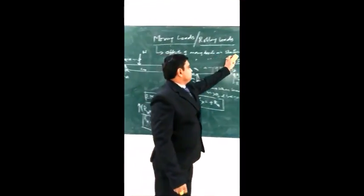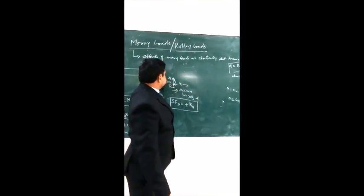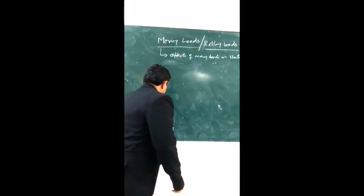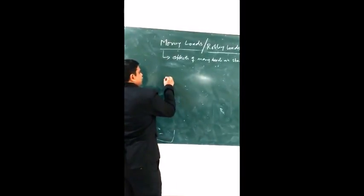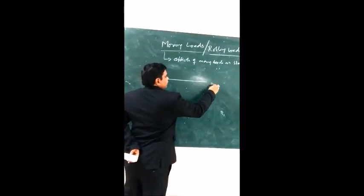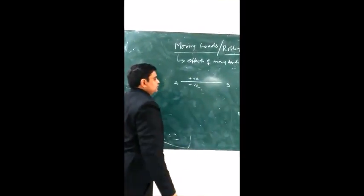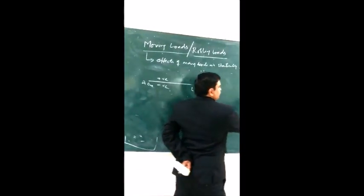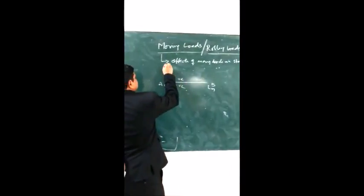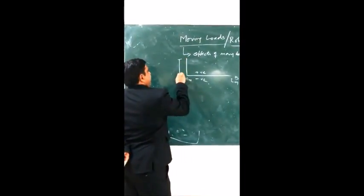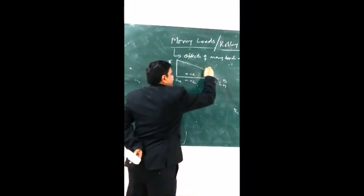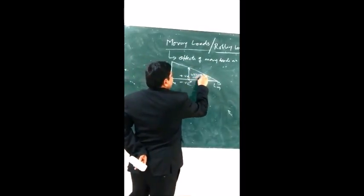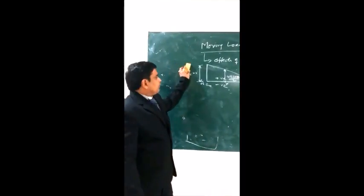Now we draw the positive shear force diagram. Draw a horizontal axis representing the beam — above the axis is positive, below is negative. The shear force at a = 0 is W (positive). The shear force at x = x is W(L − x)/L. The shear force at B is 0. This gives the positive shear force diagram.